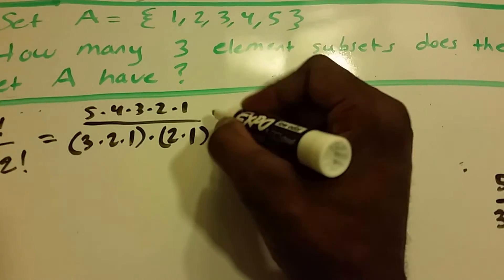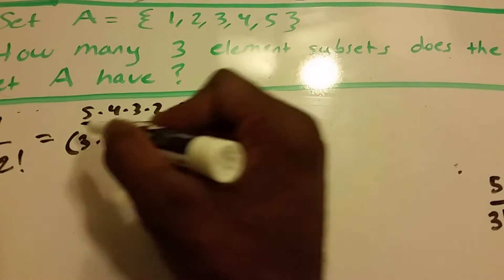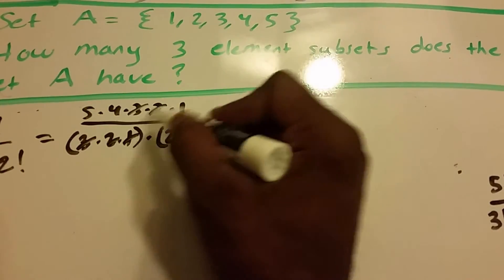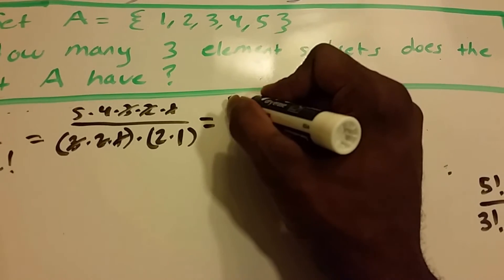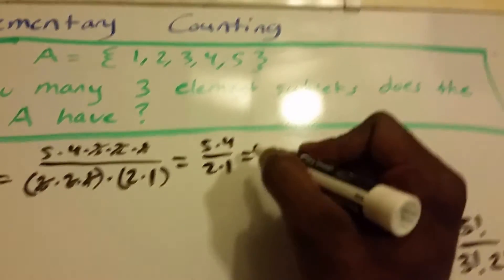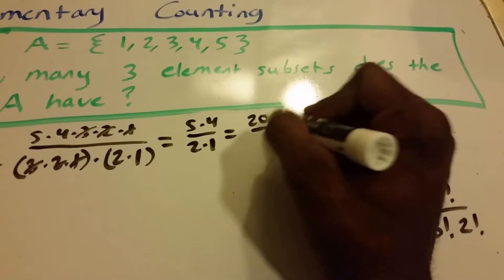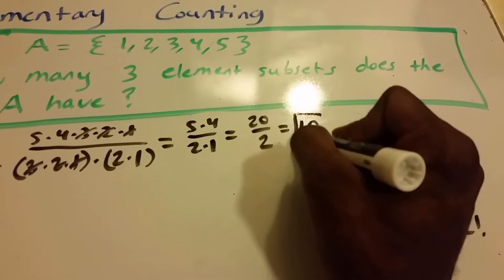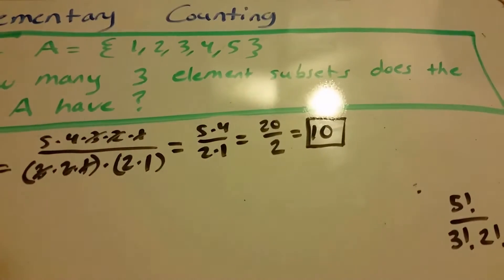And so now what we can do is, we can simplify this even more, just cross these out, and we get 5 times 4 divided by 2 times 1, which is equal to 20 divided by 2, which equals 10. So our answer is 10.